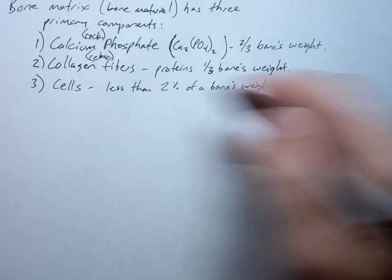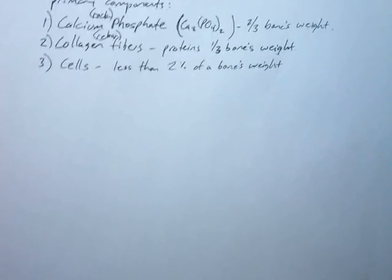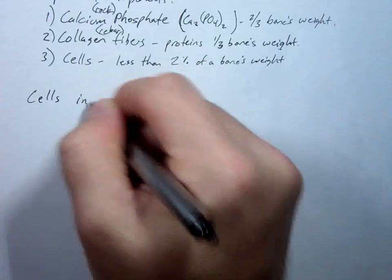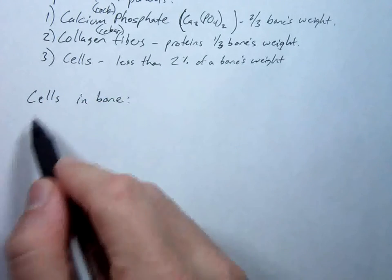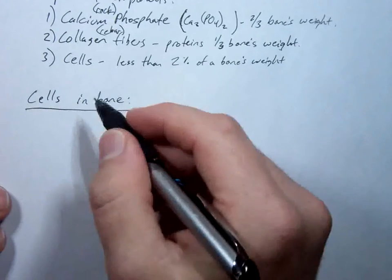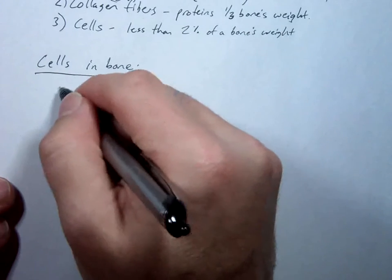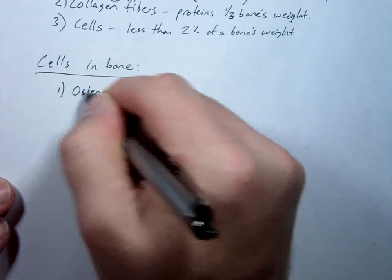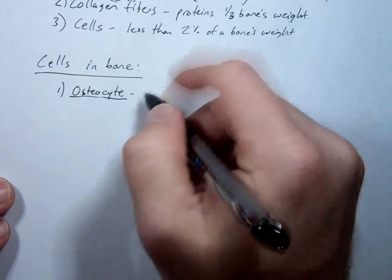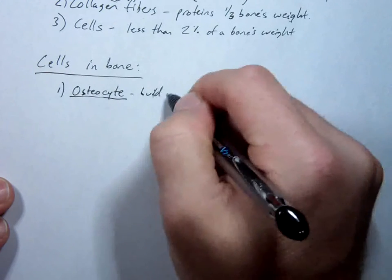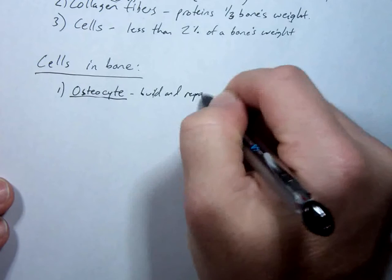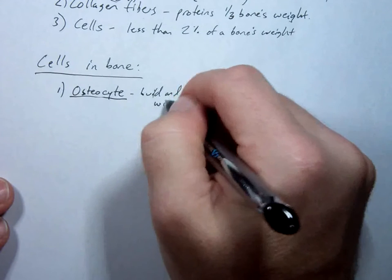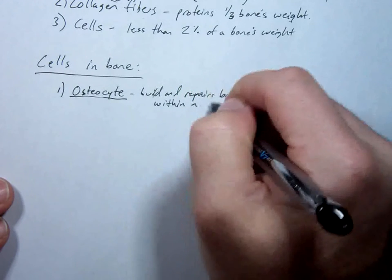Next, let's talk about cells. There are a few different types of cells in bone. The first one is the cell whose name means bone cell — that's called an osteocyte. This cell builds and repairs bone matrix within a lacuna.